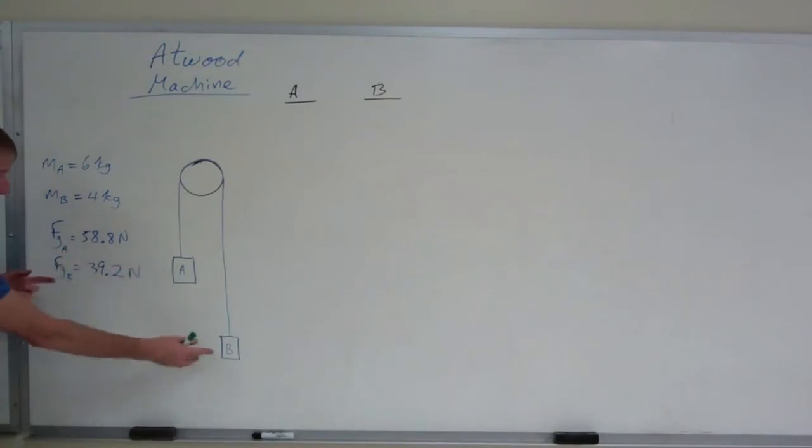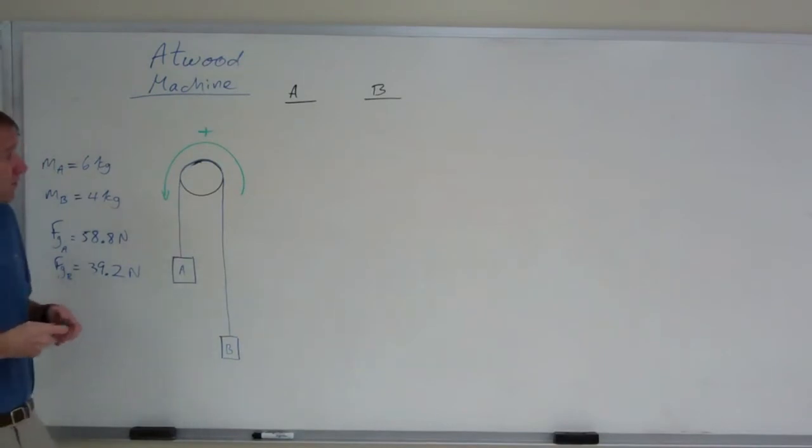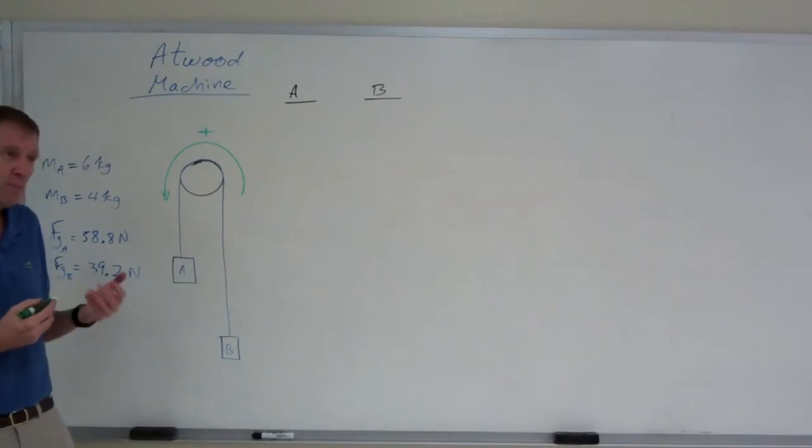A is heavier than B, and so you know that when you release this, A is going to go down and B is going to go up, in that direction. So we'll consider that direction to be positive. For the honors class, whichever weight accelerates, just go ahead and consider that to be positive.